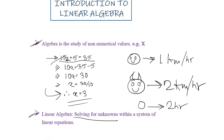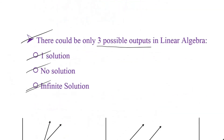So far we have learned a lot about Linear Algebra: how a linear algebra equation looks, how it helps us solve for unknowns, and that it can have only three possible outcomes — one solution, no solution, or infinite solutions. But the bigger question is how all these things are helping us in machine learning and how they are implemented behind a machine learning model.